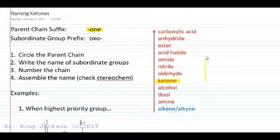If there's a higher priority group present in your compound than the ketone, and the ketone is also present, we will name that ketone as an oxo group as a subordinate group, a non-priority group in the parent chain if that higher priority group is present.